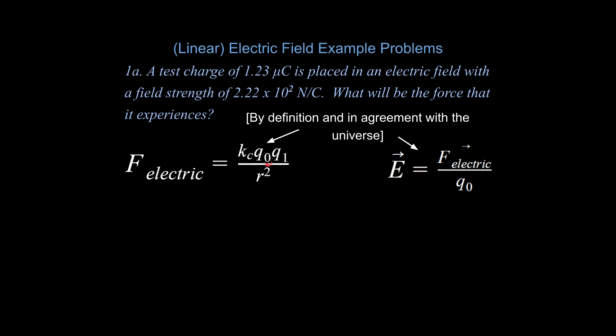I do want to point out I have changed a subscript here — we're going to call that Q0, which is going to be our small positive test charge. So if you have two charges, this equation governs the attraction or repulsion between them. You can take that and apply it to our definition of the electric field. By definition, the electric field is the force experienced by a small positive test charge divided by that charge's charge — and this works out to be independent of that value because Q0 appears in both places.